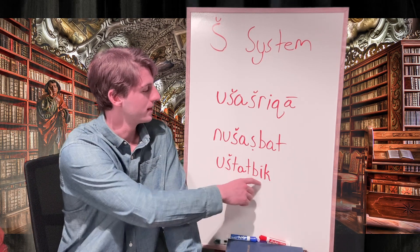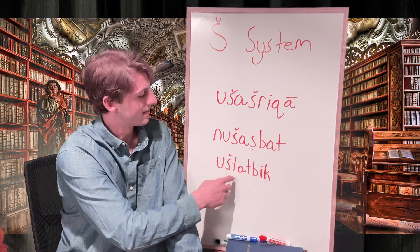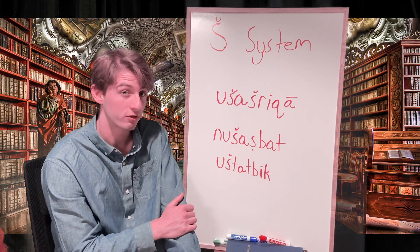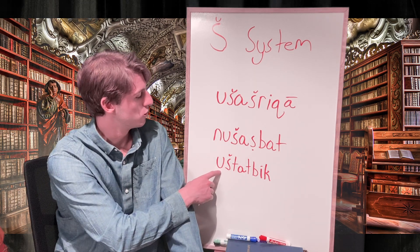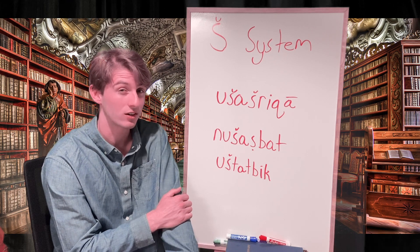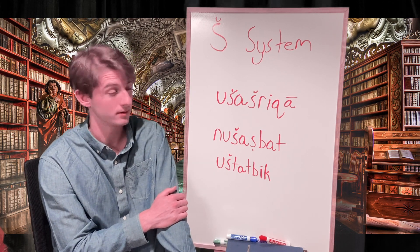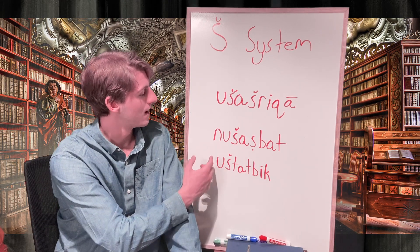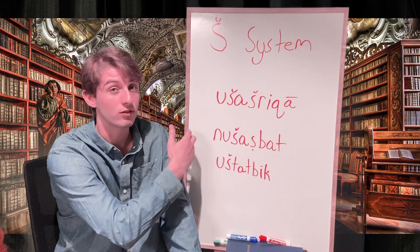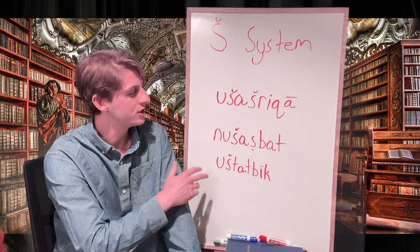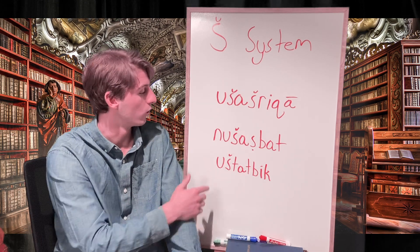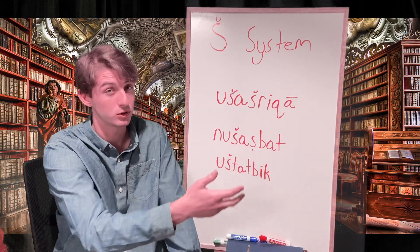Lastly we have uštatbik. Based on this I and this T, we can quickly identify this is the perfect tense. Based on the U, we know our subject is either first person singular common or third person singular common. So we could translate this as 'I have helped to pour,' 'I have caused to pour,' or 'he/she/it has caused to pour,' or 'he/she/it has helped to pour.'